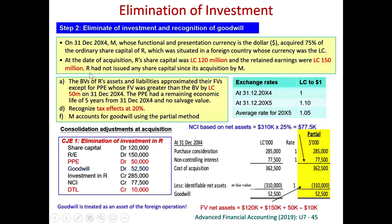So the consolidation journal entry credits investment in subsidiary $285,000 and credits NCI $77,500. We debit share capital $120,000, debit retained earnings $150,000, debit PPE $50,000, and credit deferred tax liability $10,000. Since these cannot balance, the balancing figure is goodwill, which is $52,500 — the same as previously calculated.